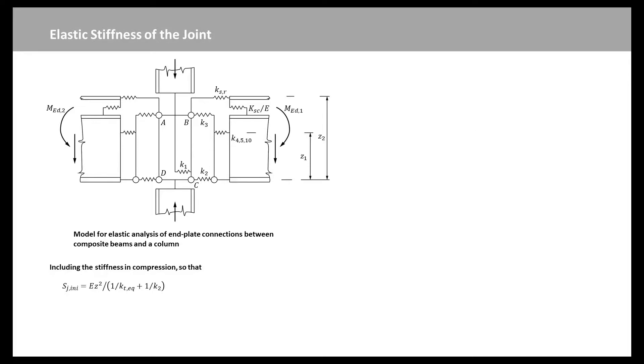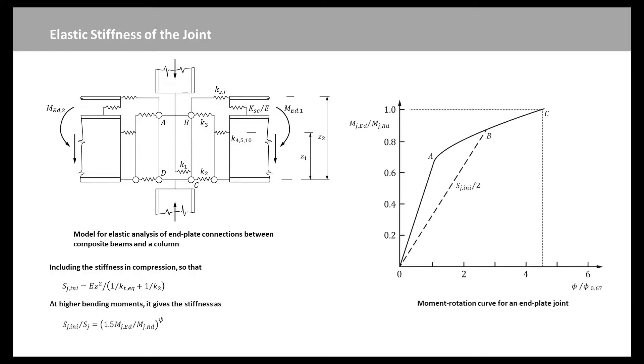Including the stiffness in compression, we obtain this equation. This stiffness is assumed to be applicable for bending moments MJED up to 2 times MJRD over 3, where MJRD is the bending moment resistance of the joint. At higher bending moments, the current Eurocode gives the stiffness as this expression, where Psi depends on the type of joint and is 2.7 for a welded or bolted end plate joint. The moment rotation curve for Psi equal to 2.7 is shown as OABC in this figure, in which phi 67 is the rotation for MJED equal to 2 times MJRD over 3.